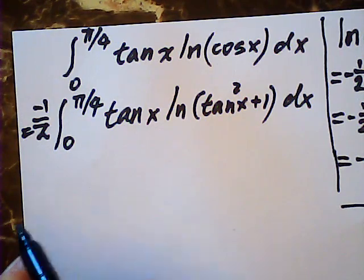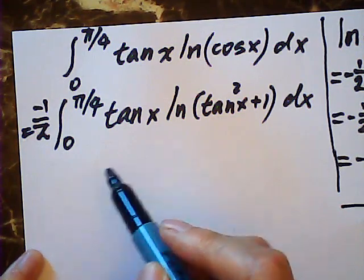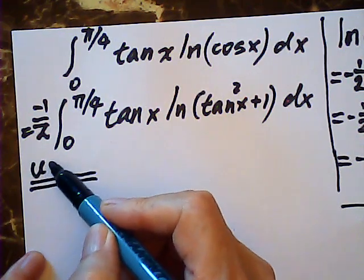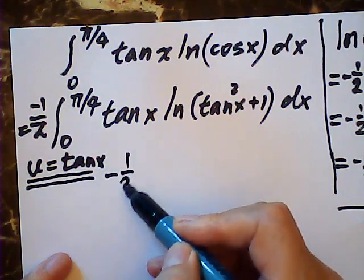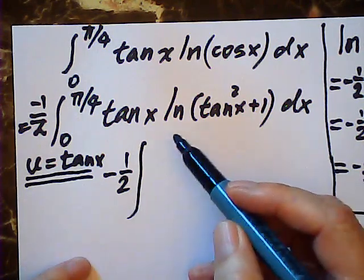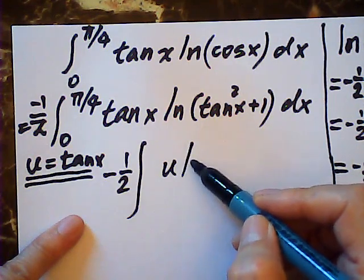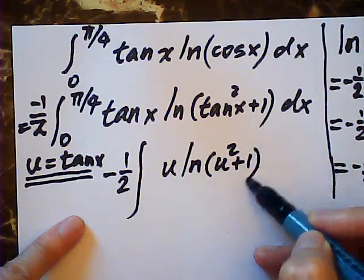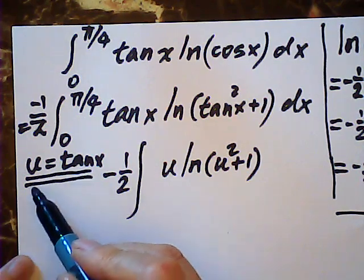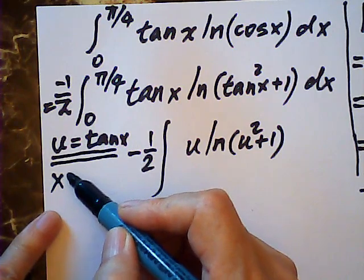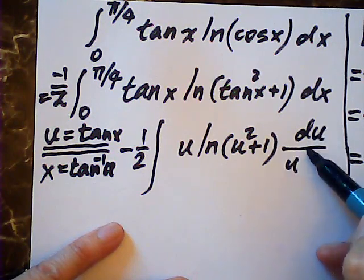Then I let u = tan(x). After this substitution, the integral becomes negative one half times the integral with u in place of tan(x), and log(u² + 1) in place of the logarithm.